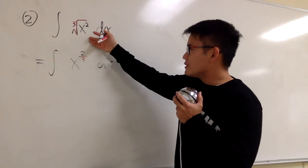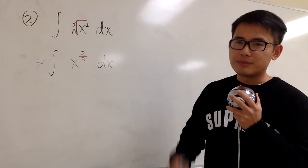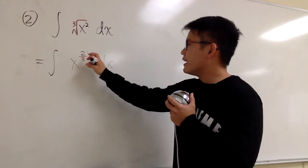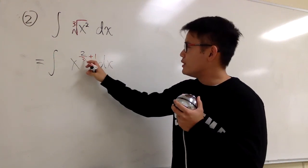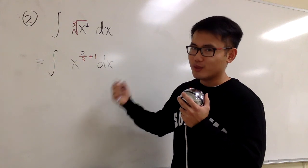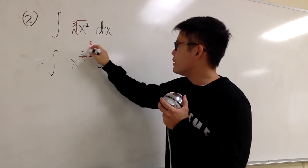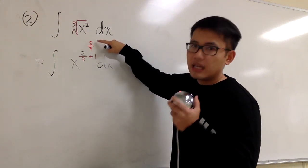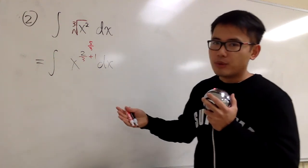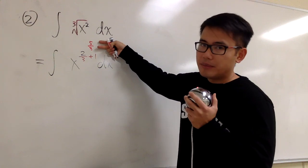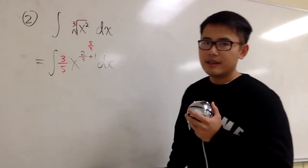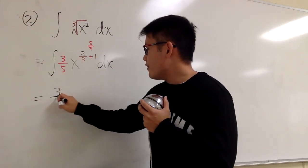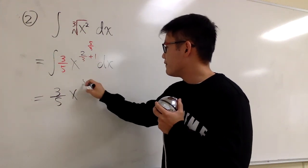Once we change this into the power form, we can use the reverse power rule. We are going to add 1 to the power: 2/3 plus 1 is 2/3 plus 3/3, which gives us 5/3. So the new exponent is 5/3. The second step is we divide by this new exponent — divide by 5/3 — which is the same as multiplying by the reciprocal, so that means we put down 3/5. At the end, the answer is 3/5 x to the 5/3 power.